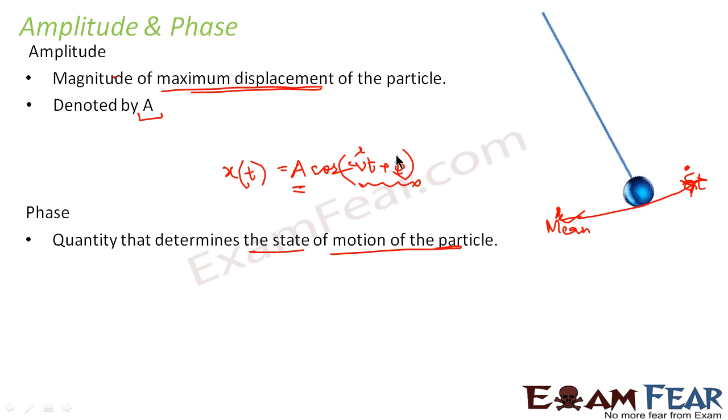So here A is the amplitude and this omega t plus phi is nothing but phase because this deals with the angular frequency plus the phase constant of the particle, that is the state of motion where the particle is right now.